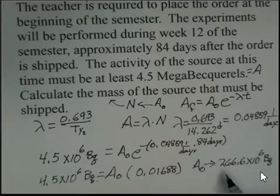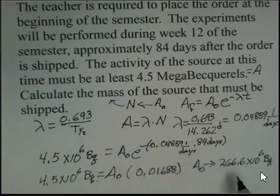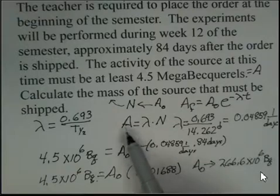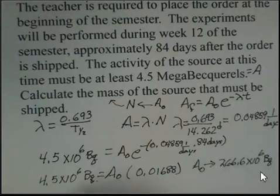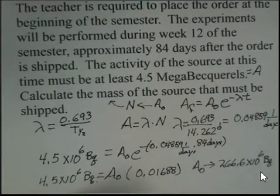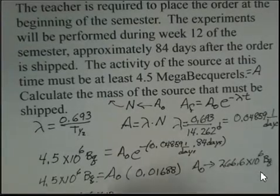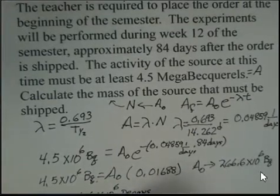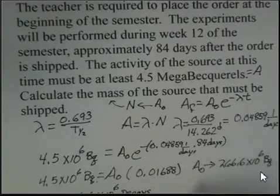Now let's make use of this relationship between activity and number of nuclei. We have the activity. This A is a general A, it could be the final activity or the initial activity, it's related to the number of nuclei. And we go ahead and make use of that. So 266.6 times 10 to the 6 becquerel. And now I'm going to go ahead and put in decays per second, the unit of the becquerel. The becquerel is one decay per second.